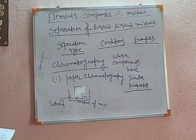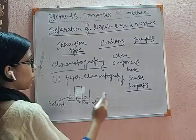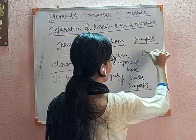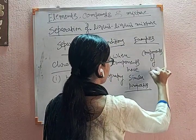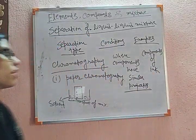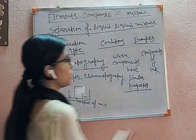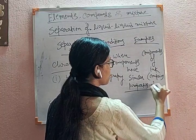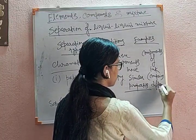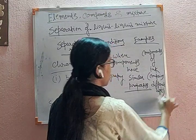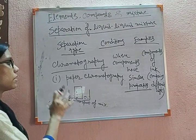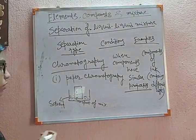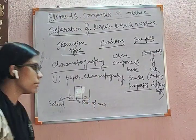For example, we can give the components of ink. Ink contains different dyes. When we apply this technique, we can separate the dyes by getting different spots for each dye present in the ink and separate them like this.